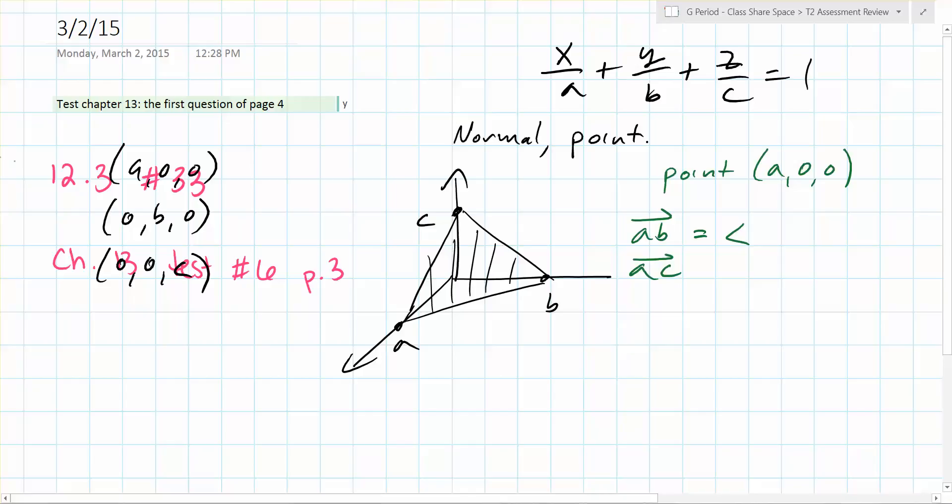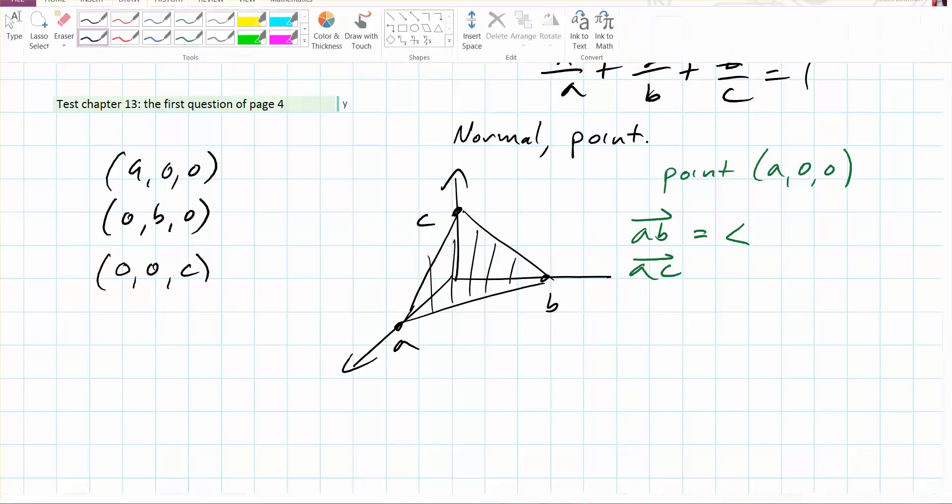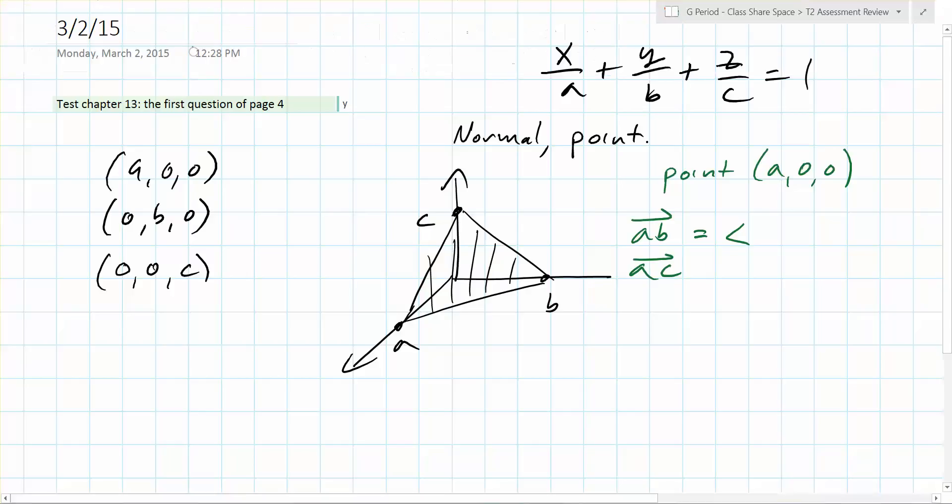If you go from A to B, be very careful. Negative a, comma what? B. B, comma 0. And what's A to C going to be? Negative a, 0, c. Exactly.